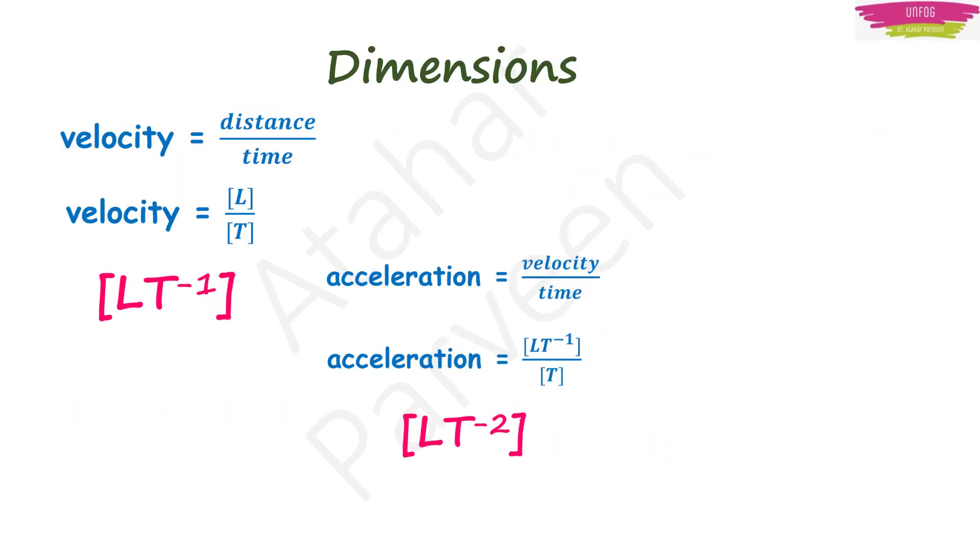For example, we know that velocity is equal to distance upon time. Distance is length, so we write as L. Time is T. So dimensional formula for velocity will become L T raised to minus 1 because time is in denominator. If you put time in numerator, it becomes minus 1.